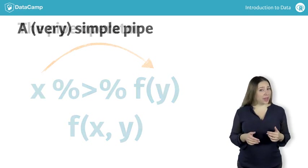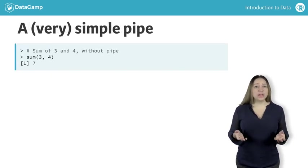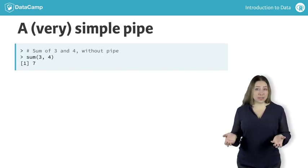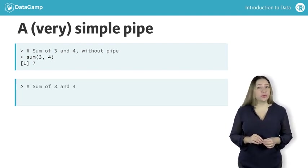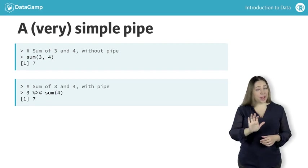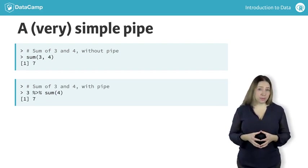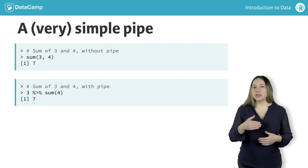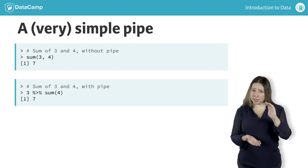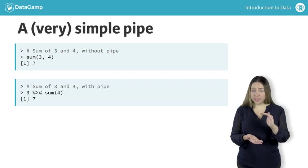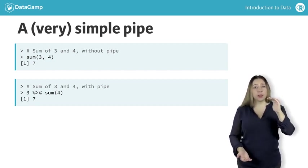For example, one way of adding numbers in R is using the sum function. Sum of 3 and 4 gives us 7. If we wanted to do the same operation with a pipe, we would write this as 3 pipe sum 4. Pipes are used commonly with functions in the dplyr package, and they allow us to sequentially build data wrangling operations. I'll start with short pipes, and throughout the course build up to longer pipes that perform multiple operations.